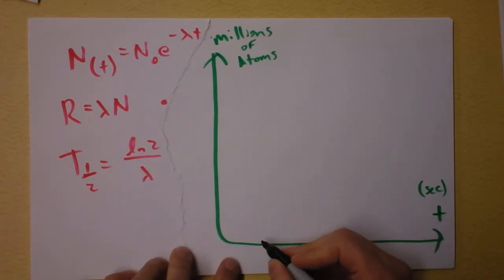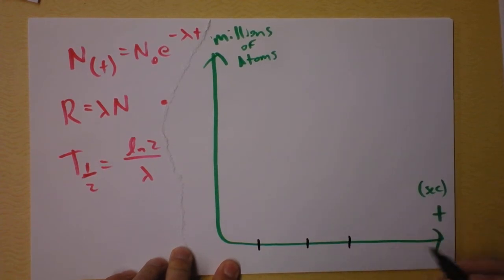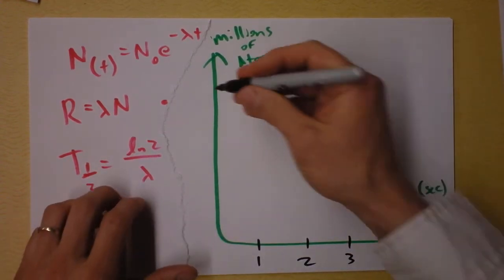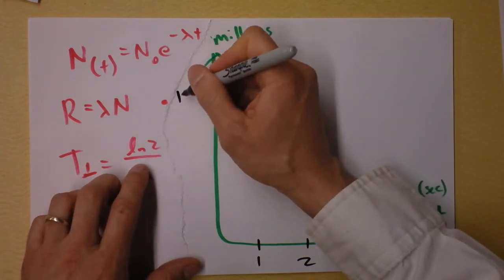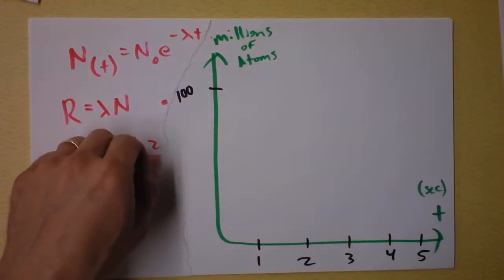So here I'll give you 1 second, 2 seconds, 3 seconds, 4 seconds, and 5 seconds. Let's say we're starting with 100 million atoms.